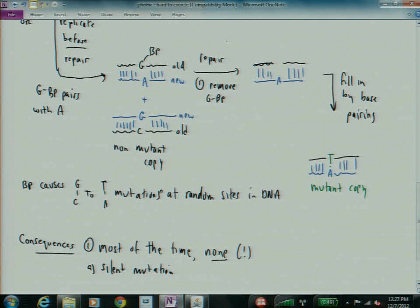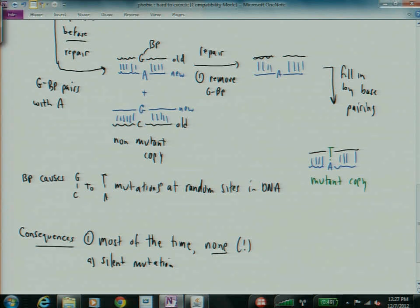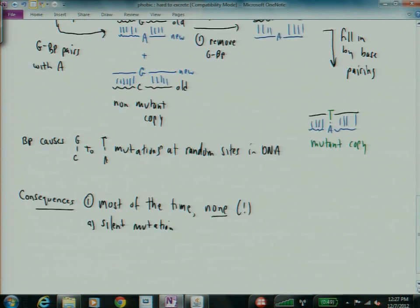After the stop codon, another good possibility, right? In the middle of an intron, right? Before the promoter. Before the start codon, right? After the terminator. Right. So there's sort of a zillion mutations that could have no effect. There's lots of low-hanging fruit.